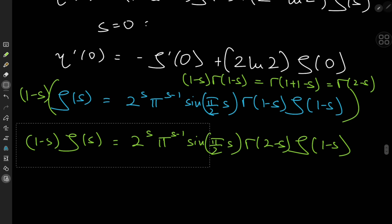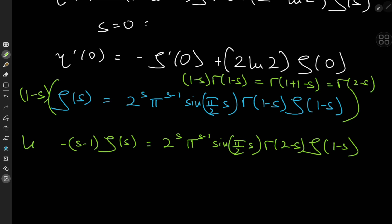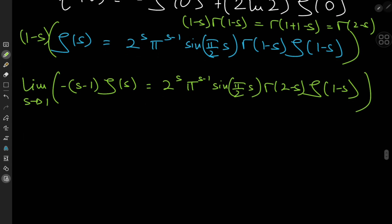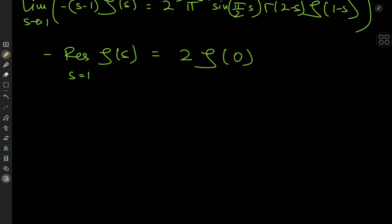Replacing (1−s) by −(s−1) and taking the limit as s → 1, the left-hand side gives the negative of the residue of ζ at s = 1. On the right: 2^1 = 2, π^0 = 1, sin(π/2) = 1, Γ(1) = 1, so we get 2 · ζ(0). The residue of ζ at s = 1 equals −2ζ(0).